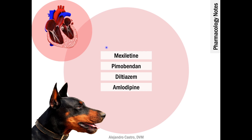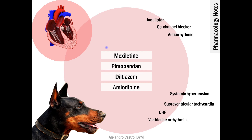Here we have four medications: Mexiletine, Pimobendan, Diltiazem, and Amlodipine. We also have mechanism of action and some indications — for example, systemic hypertension, supraventricular tachycardia, congestive heart failure, and ventricular arrhythmias — and the idea is that you try to match each medication to each indication and each mechanism of action.